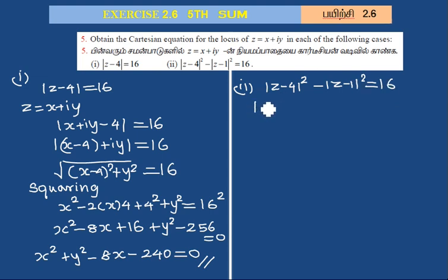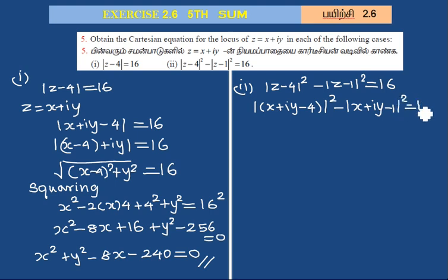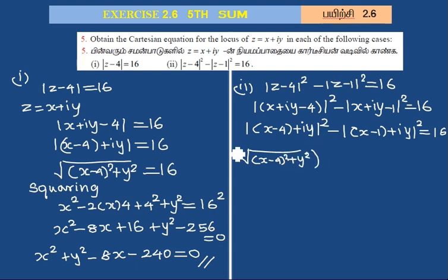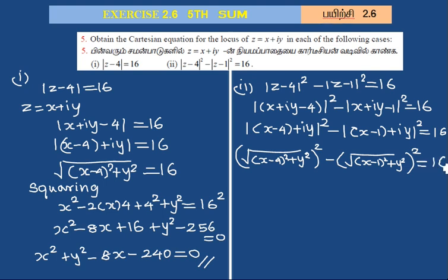Substituting z equal to x plus iy: modulus of z minus 4 squared becomes x minus 4 squared plus y squared, and modulus of z minus 1 squared becomes x minus 1 squared plus y squared. So we write: x minus 4 squared plus y squared minus x minus 1 squared plus y squared equals 16.